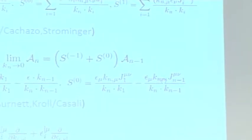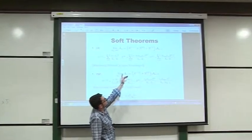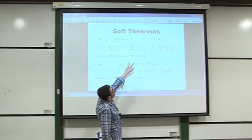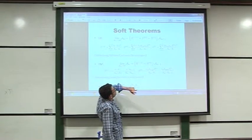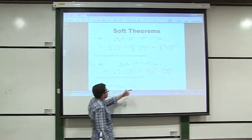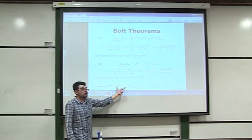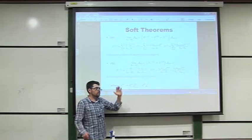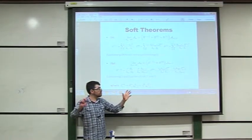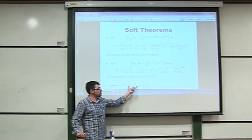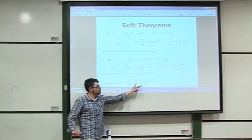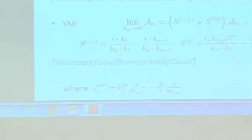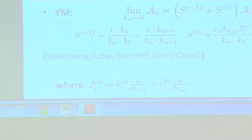At sub-leading and sub-sub-leading order, the terms actually depend on an angular momentum generator J, which can basically split into two pieces: one that encodes orbital angular momentum and one that encodes spin angular momentum.